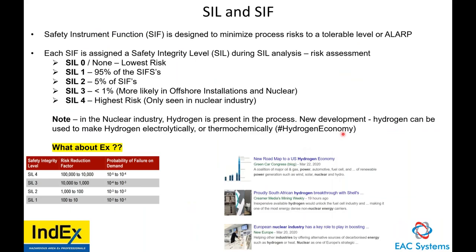SIL — Safety Integrity Levels — and SIF — Safety Instrument Functions — are designed to minimize process risk to a tolerable level or ALARP. Each SIF is assigned a Safety Integrity Level during a SIL analysis risk assessment. SIL zero is none/lowest risk. SIL one covers about 95% of all safety instrument functions. SIL two is about 5%. SIL three is less than 1%, more likely in offshore and nuclear industries, but is found onshore in HIPS and certain SIS systems.